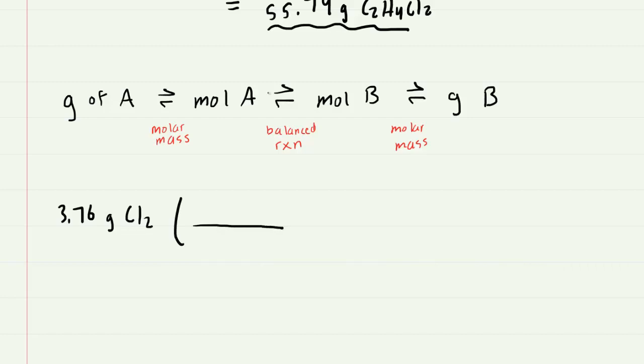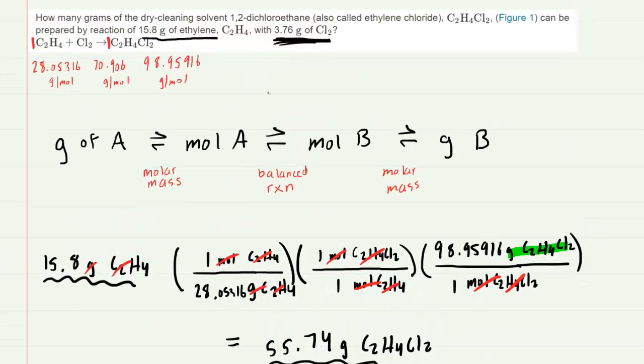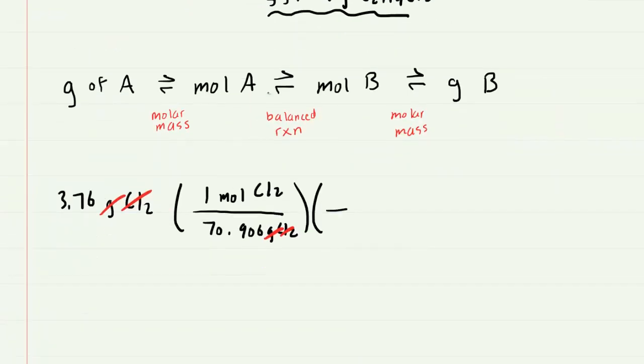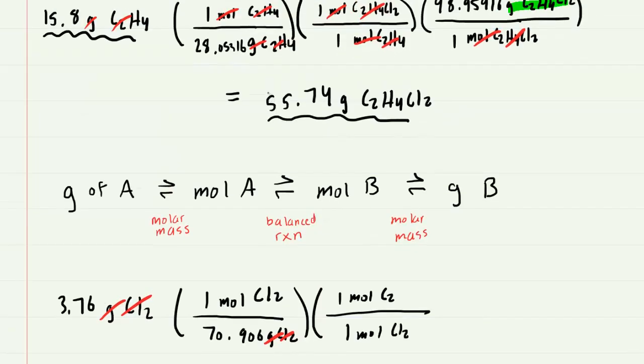So here we go again. We'll speed it up a little bit. But this time, we're going to be using the molar mass to convert the grams of Cl2 into the moles of Cl2. We saw earlier that one mole of Cl2 had a mass of 70.906 grams of Cl2. We set it up accordingly so that the grams will cancel out. Next, we'll go from moles of Cl2 to moles of our product. Remembering the ratio was 1 to 1. We can see right here that one mole of Cl2 produces one mole of the product, C2H4Cl2.